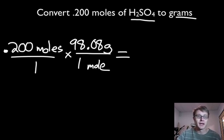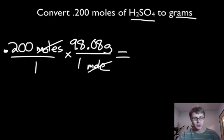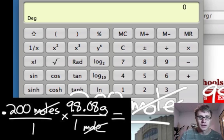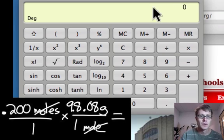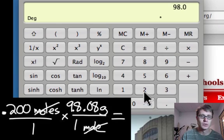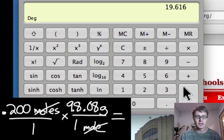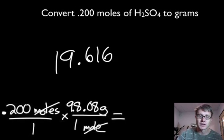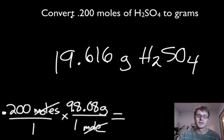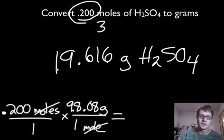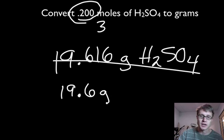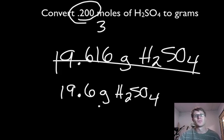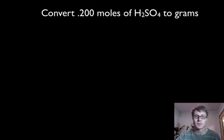So I have 98.08 grams per 1 mole of H2SO4 in my conversion. I cross off the moles, and now I've gotten to grams. I take 0.200 times 98.08 on the calculator, which gives 19.616. Now applying significant digits — 0.200 has 3 significant digits — so the correct answer is 19.6 grams of H2SO4. That's how you go from moles to grams.